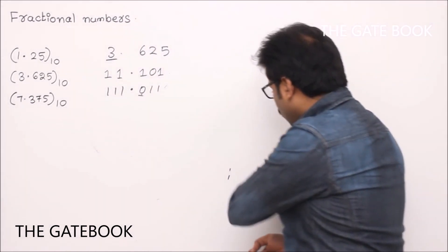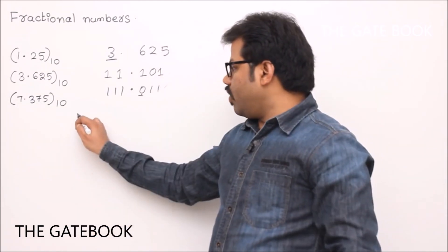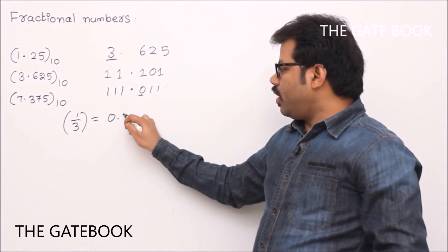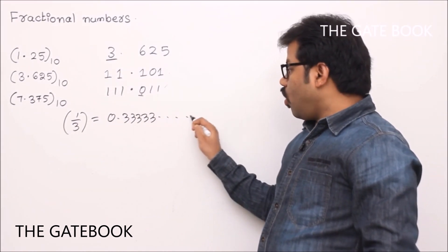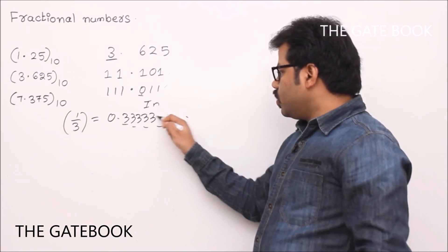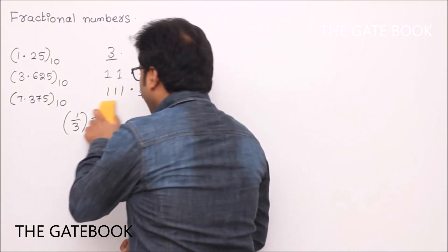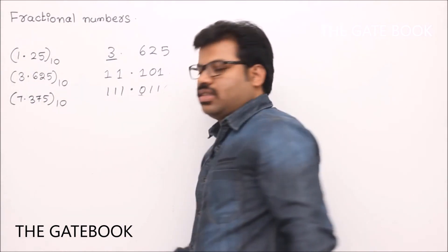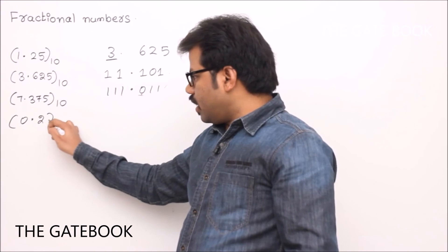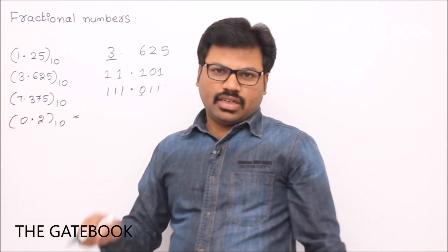In that way, we can convert any decimal number to binary when you have fractional numbers. But sometimes, what happens is you can't represent a number with a finite number of bits. For example, in decimal when you have 1 by 3, the decimal representation is 0.333333... — how many digits do you require? Infinite. Without infinite positions, we can't represent 1 by 3 exactly. In the same way in binary also, we have such patterns. For example, take 0.2 base 10 — whatever positions you take, you can't represent it exactly.